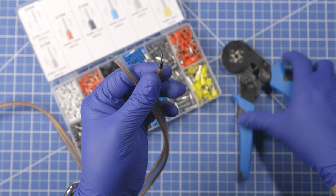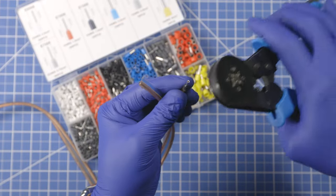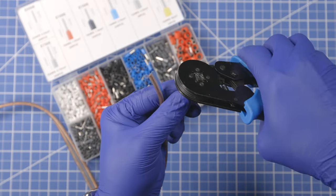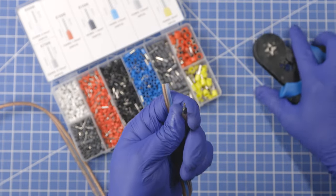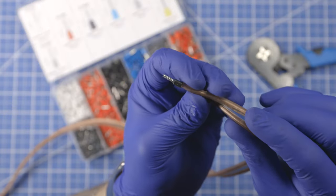So, get that end position like that. Just take your crimpers, seat it in there all the way, and just squeeze. And there you go.